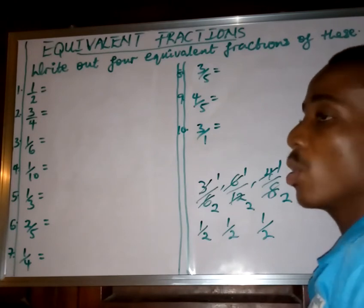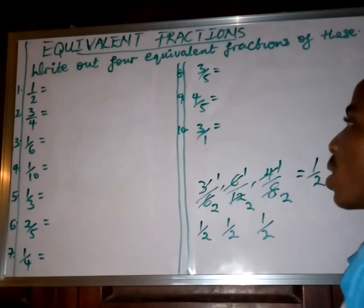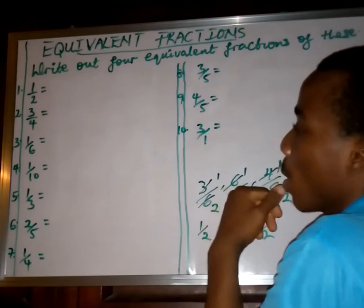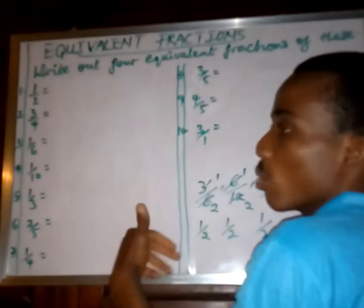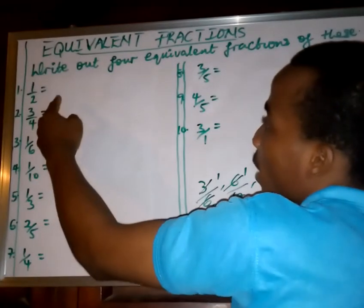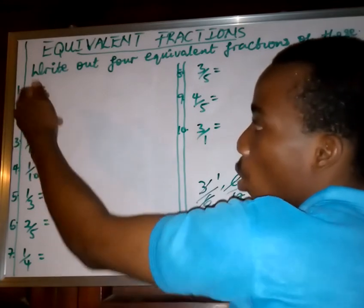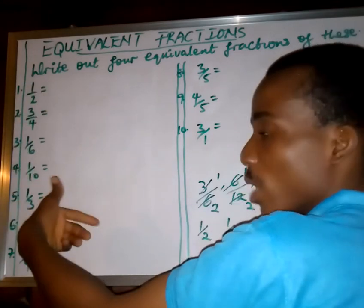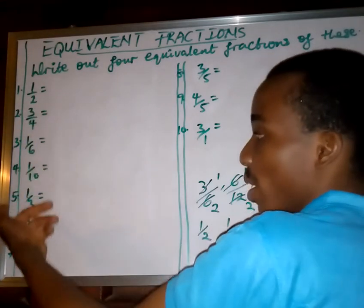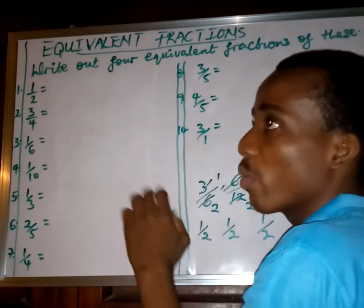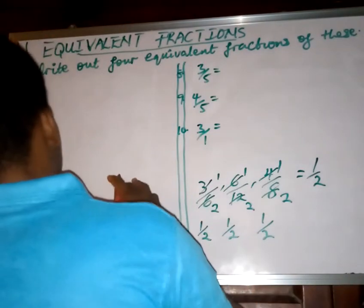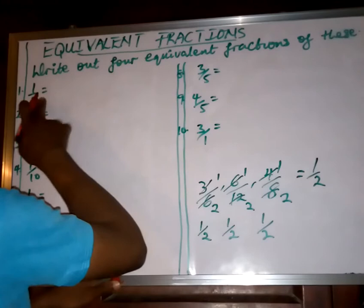So equivalent fractions are fractions that give us a particular value when they are divided. Now, how do you write out 4 equivalent fractions? What we must do is multiply to get equivalent fractions — we multiply both the numerator and denominator by numbers. To get the first equivalent fraction of 1 over 2, we multiply up and down by 2; for the next, by 3; then by 4; then by 5.